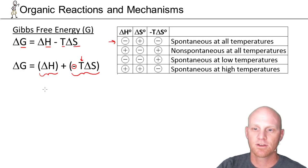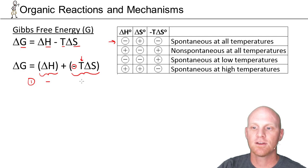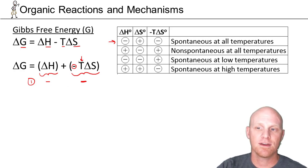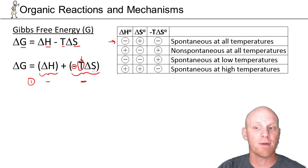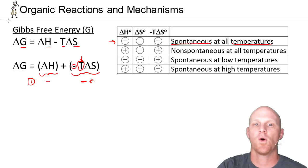In situation one, delta H is negative — the first term is negative — and delta S is positive, which means negative T delta S is also negative. Adding two negative numbers always gives a negative result. The second term has temperature in it, so at high temperatures the magnitude is large and at low temperatures it's small, but whether it's a big negative or small negative, adding two negatives means delta G is negative. This reaction is spontaneous at all temperatures.